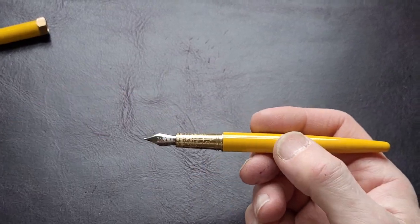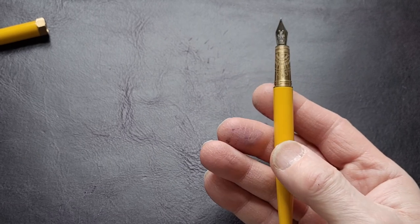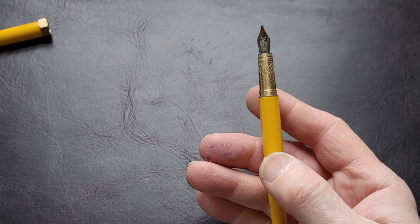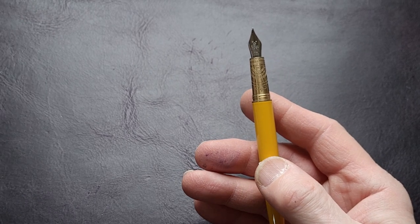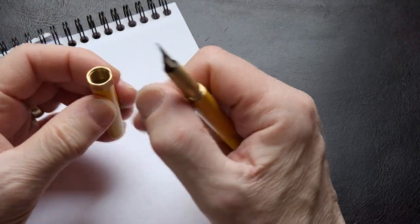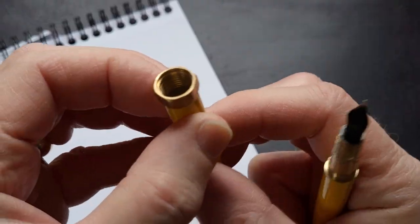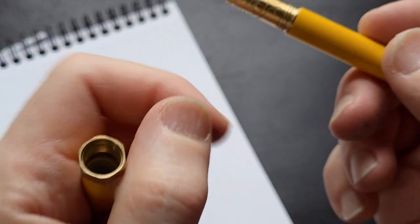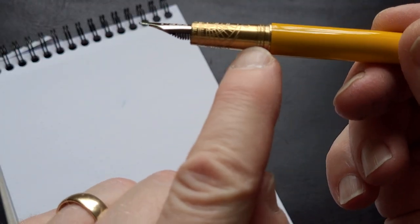I'm assuming it's probably maybe a Jowo nib or something along that line. I'm not too sure what the nib is. This is brass and you can see there's brass screws in there.